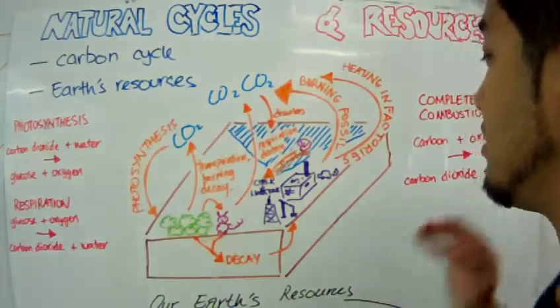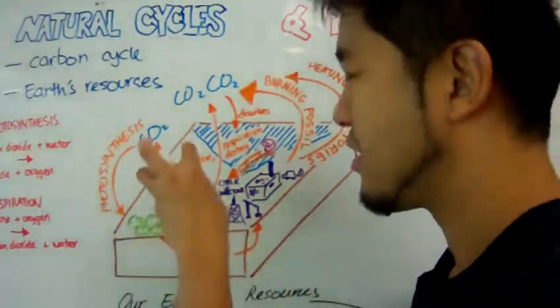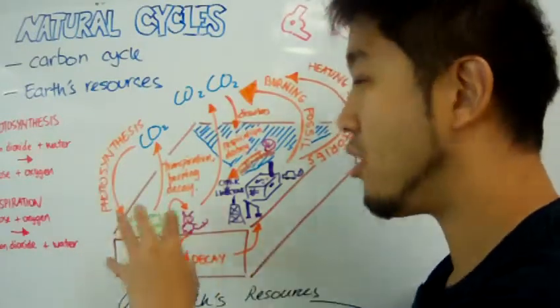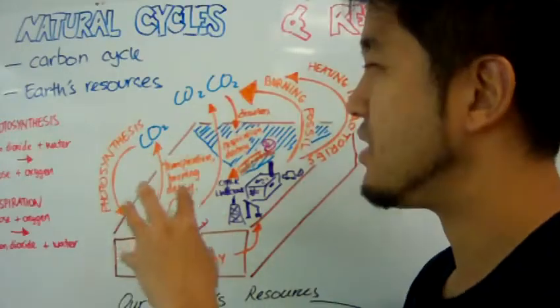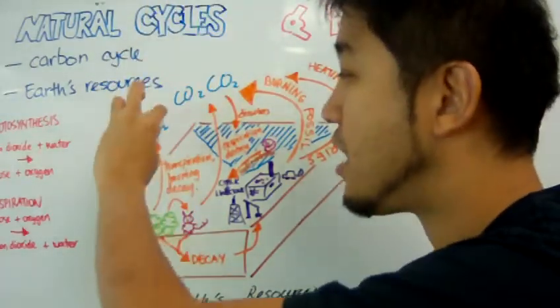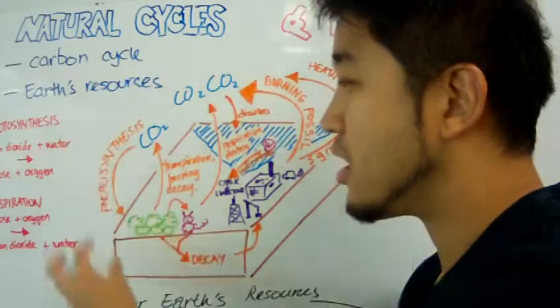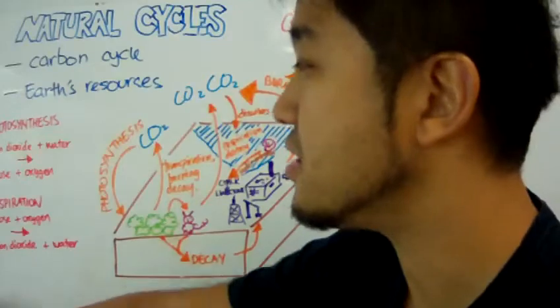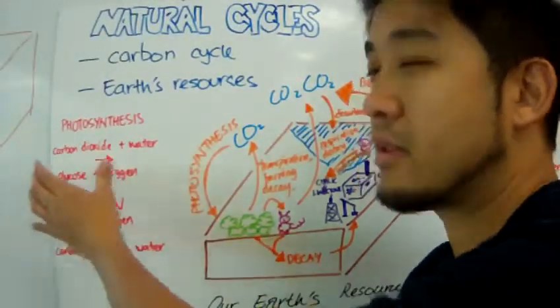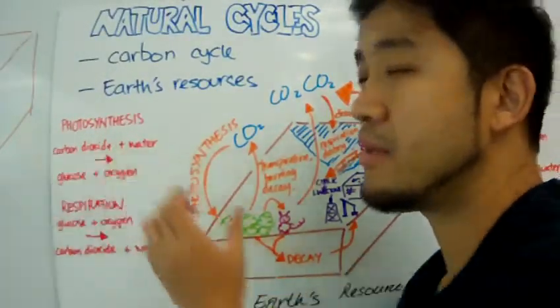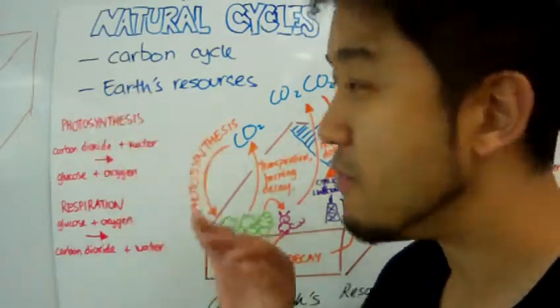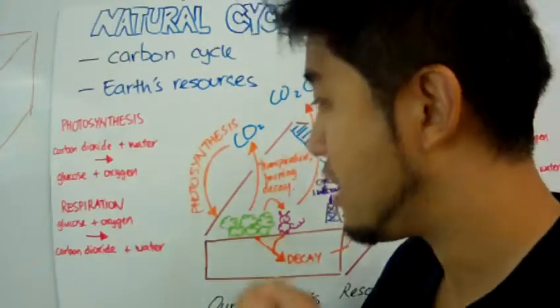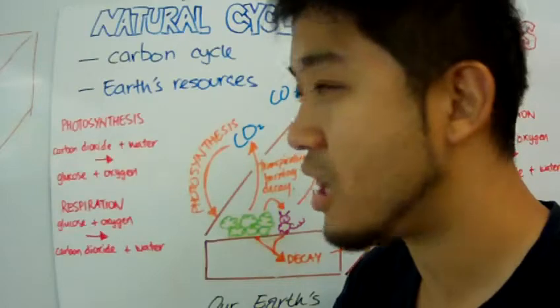So here is the carbon cycle. Let's start with this green stuff right here—that's plants, the flora. Plants take carbon dioxide from the atmosphere and convert it into something useful in a process called photosynthesis. Plants absorb carbon dioxide from the atmosphere and water from the roots, and convert that into glucose and oxygen.